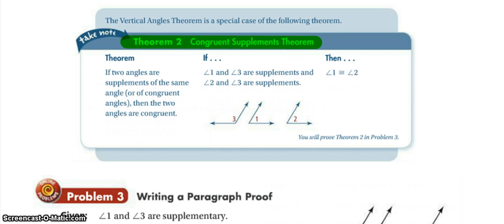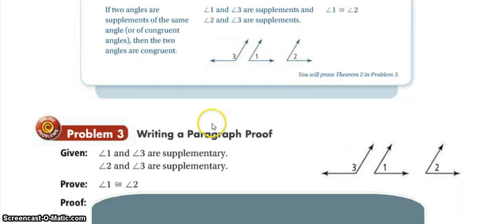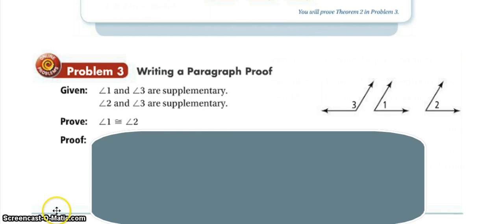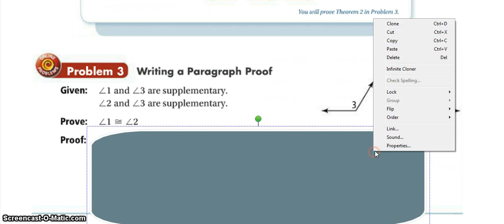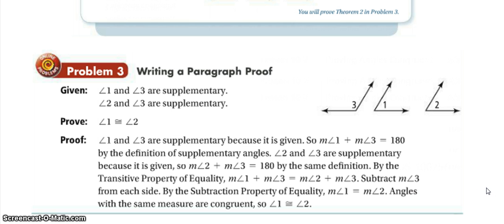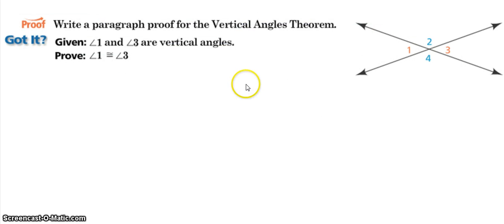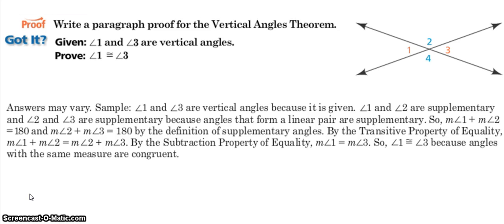In your notes, you should have a two-column proof that proves the vertical angles theorem. Take that two-column proof and turn it into a paragraph proof. All we're doing is saying that if angles one and three are vertical, they must be congruent — pause and write out that paragraph proof. This should look very similar to your two-column proof: you'll have every statement either followed by its reason, or the reason coming first, such as 'by the transitive property' putting the reason before the statement.